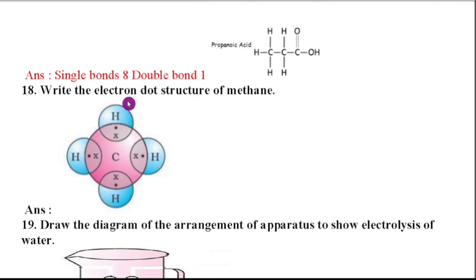Eighteenth question, write the electron dot structure of methane. So methane they asked. So here, 1 carbon bond is there and 4 hydrogen bonds are there. So this is the electron dot structure. It is very important children. Even I have given in the passing package also. So practice.